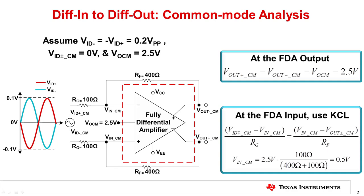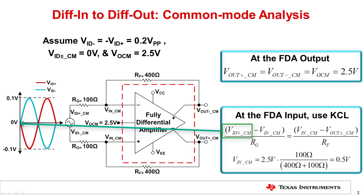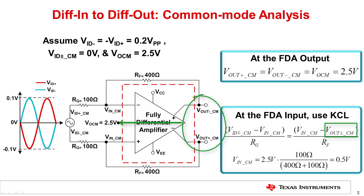First, let's look at the common mode component at the input and output. To determine the amplifier's input common mode, use Kirchhoff's current law at either of the amplifier's input nodes. The equation is shown here. Solve the equation to determine the amplifier's input common mode, or VIN_CM. The input signal's common mode voltage was previously defined as 0 volts. By definition, each output of the amplifier is level shifted by the VOCM voltage, which in this case is 2.5 volts. Finally, substituting the values of RF and RG into the equation and solving for VIN_CM results in an input common mode voltage of 0.5 volts.